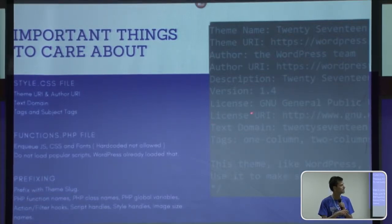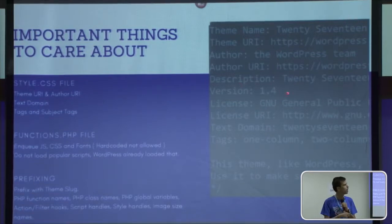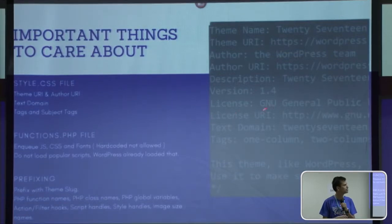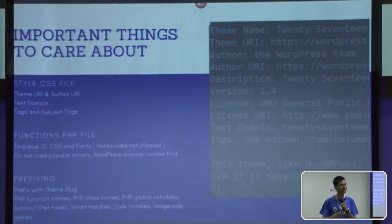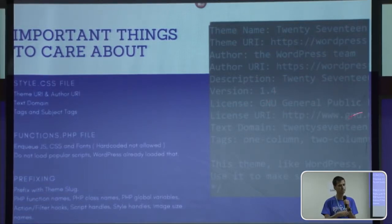License URI and license must be mentioned — which license you are using, whether GPL version 2, GPL version 2 or later, or GPL version 3. If you don't mention the license, the theme will not be approved because it must be GPL. Generally lots of themes use GPL version 2 or later. You need to write the license, the GNU General Public License, and the license URI. Each time you update the theme, update the version number — for example, from 1.4 to 1.5 or 1.4.1.